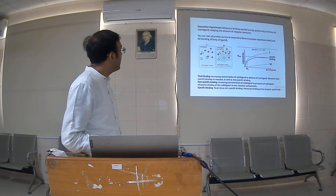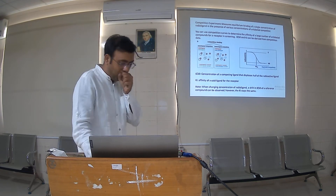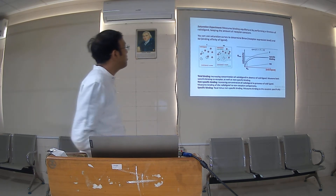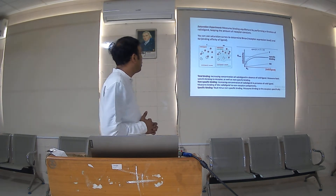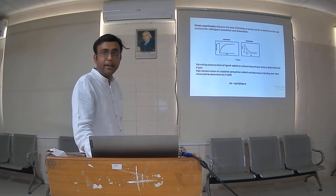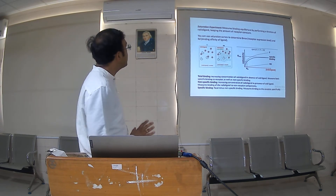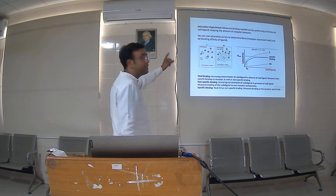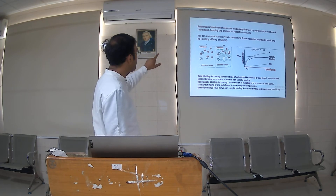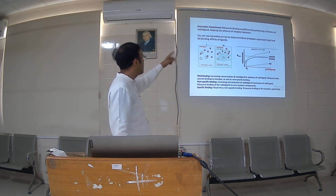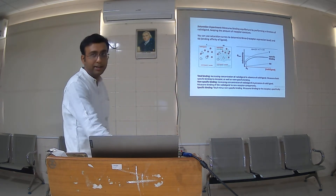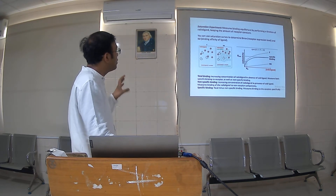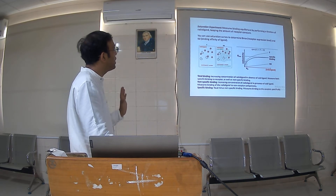There are different types of assay experiments: saturation experiments, competitive experiments, and kinetic experiments. The saturation experiment measures binding equilibrium by performing a titration of a radioligand, giving the amount of receptor constant. In the diagram, the yellow circles are radioactive molecules and the green circles are non-radioactive or 'cold' ligands. In the saturation experiment, you can determine Bmax — the receptor expression level — and KD, the binding affinity of a ligand.